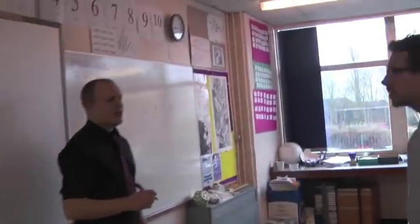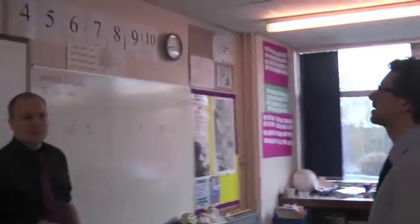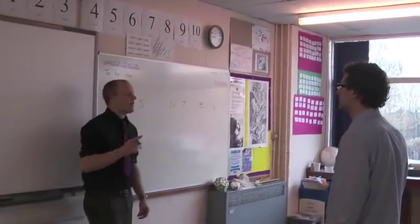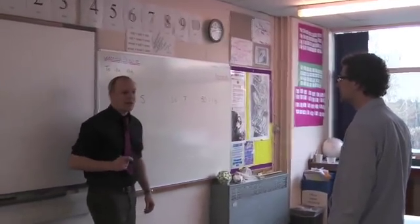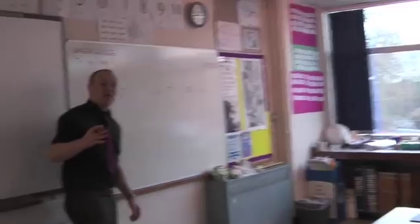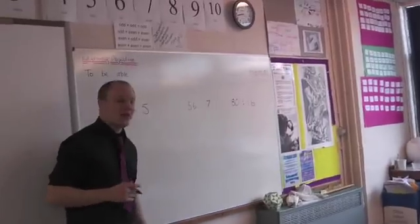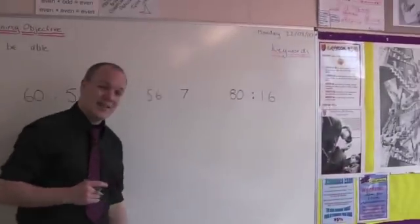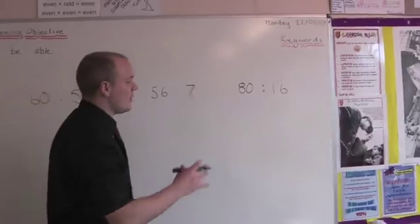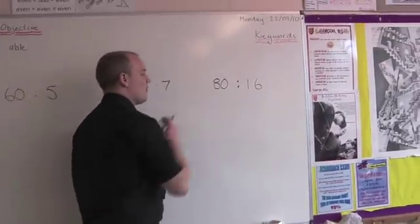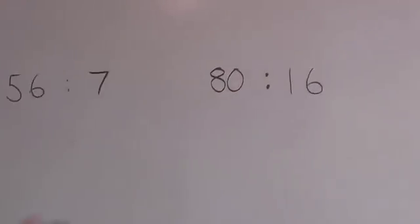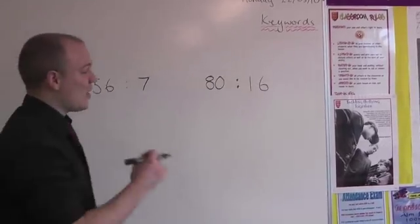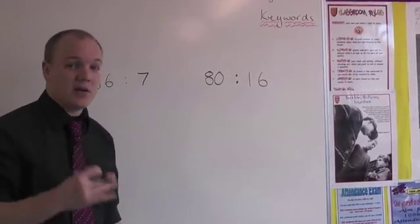Hello. Can you help? Certainly. Mr Tucker says it's a task again — we need to be able to cancel down ratios. I can help with that, certainly. Going on my board. In fact, I'm going to pick the hardest one first. If you look over this side of the board, I've got a ratio of 80 to 16. Now what I'm going to do is simplify. I'm going to pick a common factor — and that common factor is going to be 2.